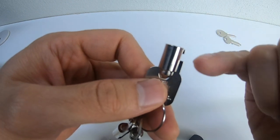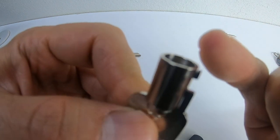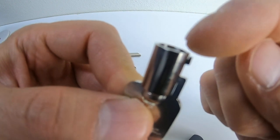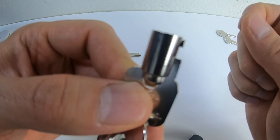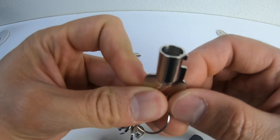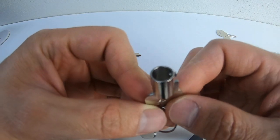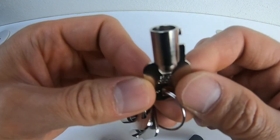And these keys basically have notches or cuts around the edge of this tubular key. It allows it to be able to push up, similar concept, where it pushes up certain pins to certain heights and allows the key to turn.